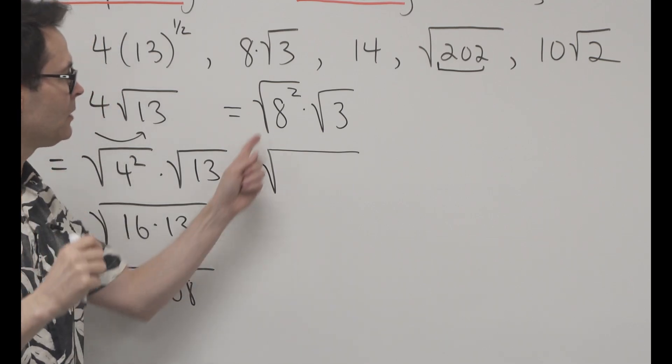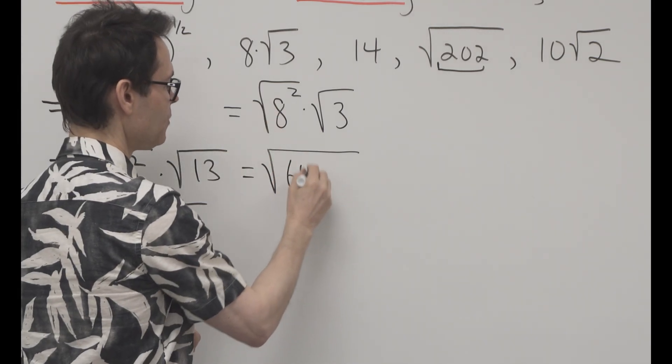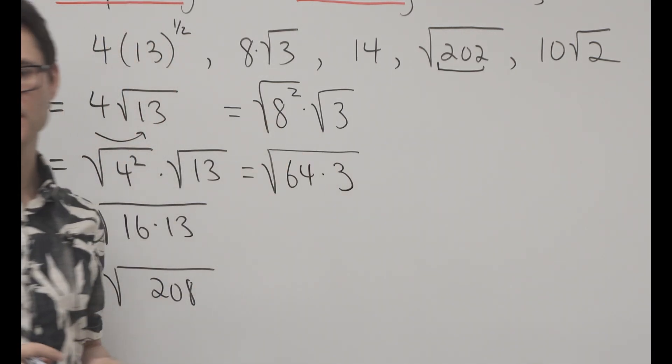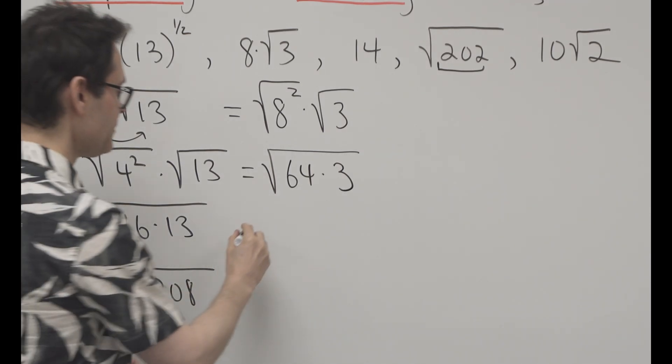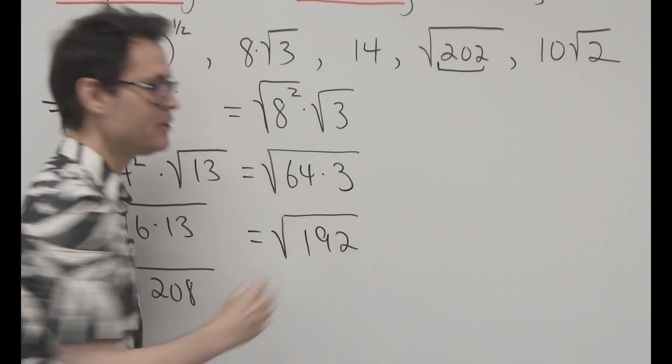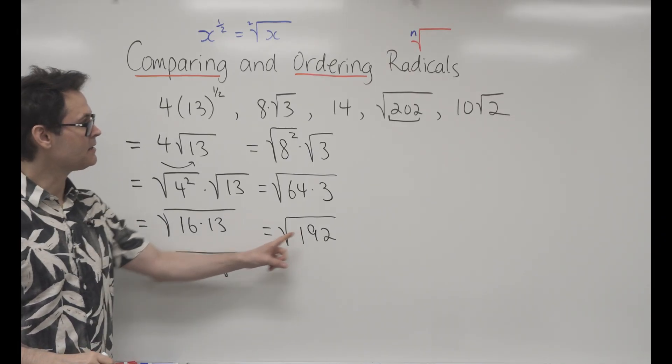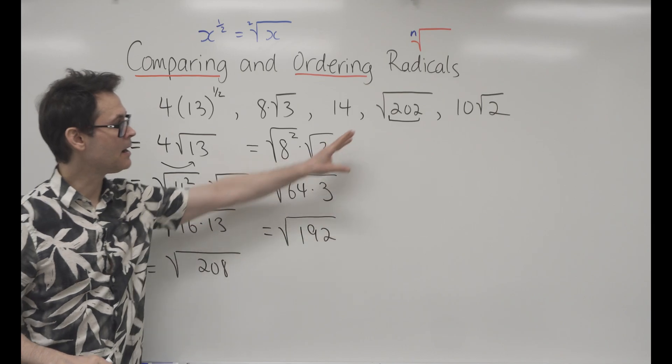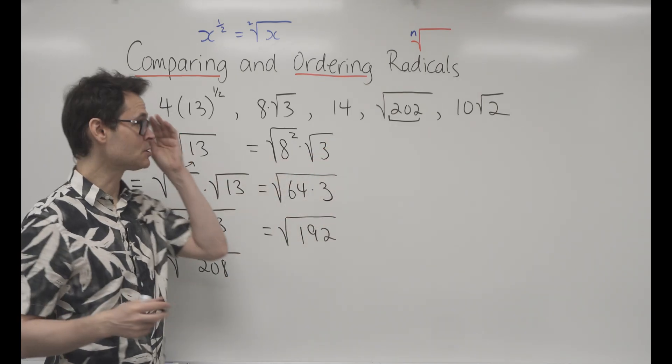This turns out to be, I can combine that under one radical. 8 squared is 64 times 3, and then I multiply those two numbers together and get 192. So you can see here, all of a sudden, I have pretty good numbers to do comparisons with.